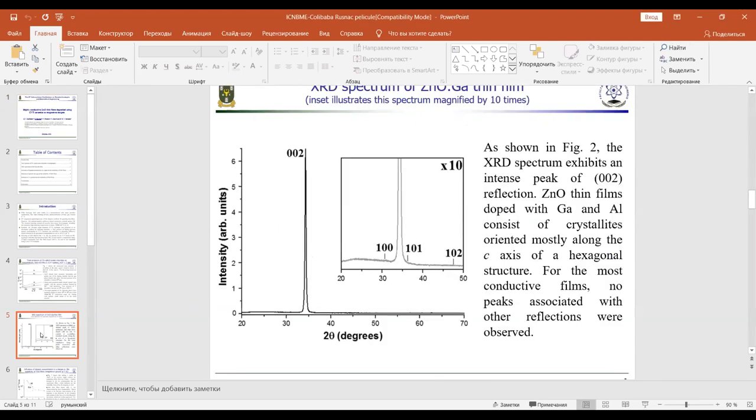As shown in Figure 2, the XRD spectrum exhibits an intensive peak of 002 reflection. Zinc oxide thin films doped with gallium and aluminum consist of crystallites orientated mostly along the C axis with a hexagonal structure. For the most conductive films, no peaks associated with other reflections were observed.